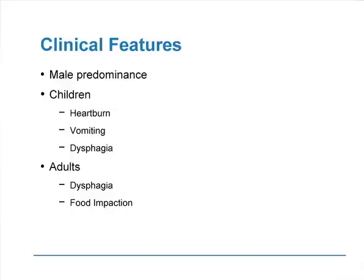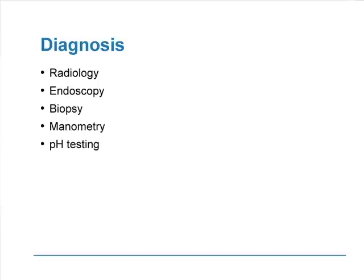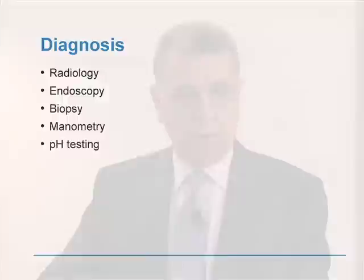The clinical features show male predominance. In children, they present with heartburn, but also with vomiting and dysphagia. In adults, the main presentation is dysphagia and a history of food impaction. The diagnosis of EOE may be made by radiology, endoscopy, biopsy, and manometry and pH testing.